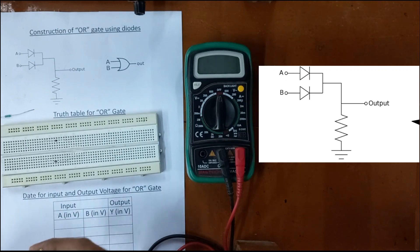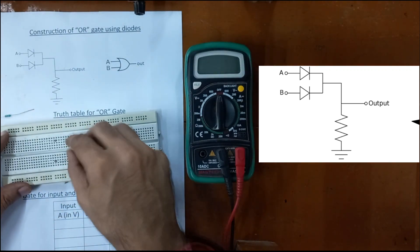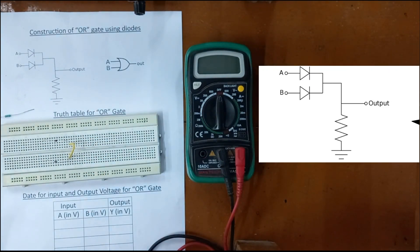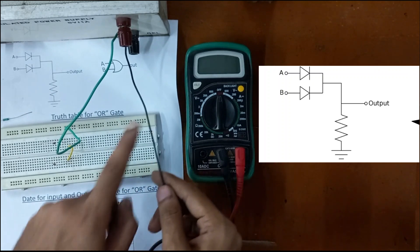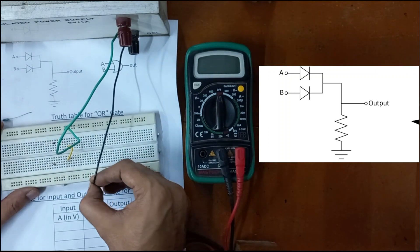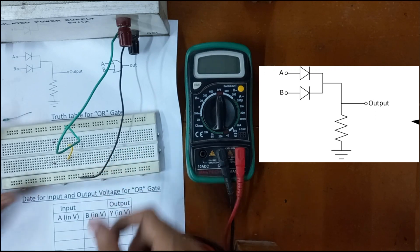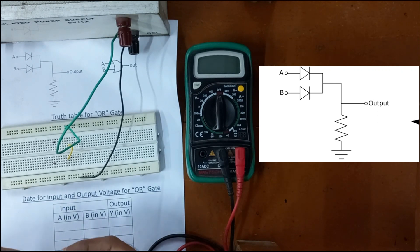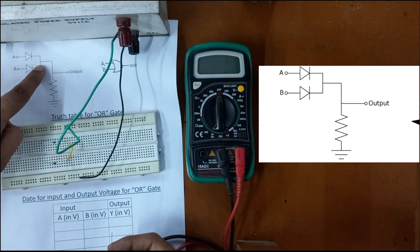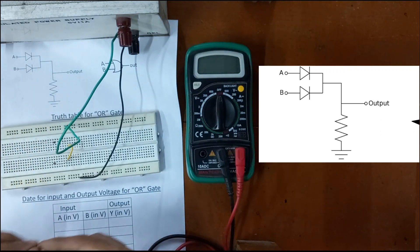Let's connect the N sides together using a wire. Now let's keep the positive terminal on the upper side of the board and the black one on the lower side. We need to connect the resistance — one end of the resistance goes to the N side of the diodes and the other end goes to ground.